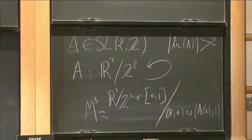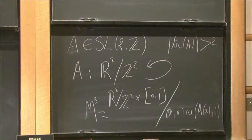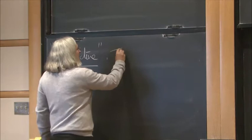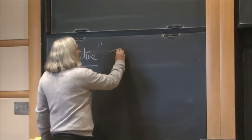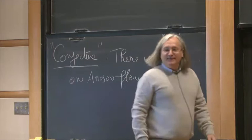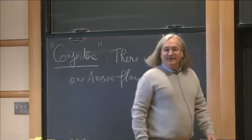So what I want to do today is somehow restore hope. I want to give a conjecture that I will state now in a very weak way. The conjecture is — I put it in quotes because the rest of the talk will explain the meaning — there is only one Anosov flow, up to something I have to explain.